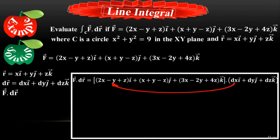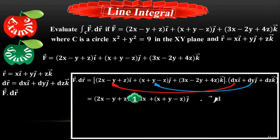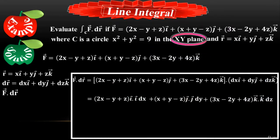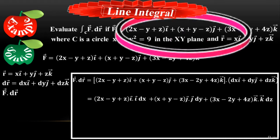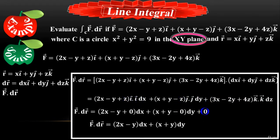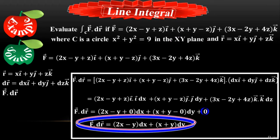When taking the dot product, i·i = 1, j·j = 1, and k·k = 1. Since the circle is in the xy-plane, we have nothing to do with z — we put z = 0. Wherever there is a z variable, substitute 0, giving: (2x − y)dx + (x + y)dy. This is the final value of the dot product of vector F and dr.